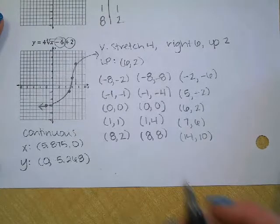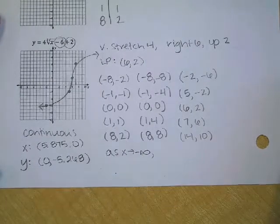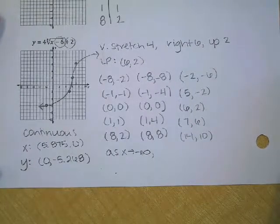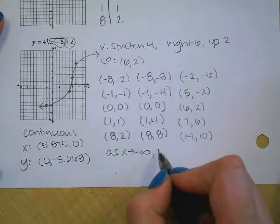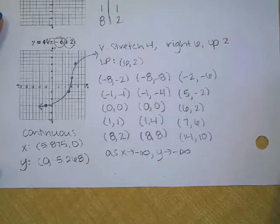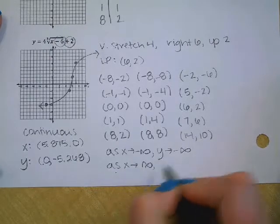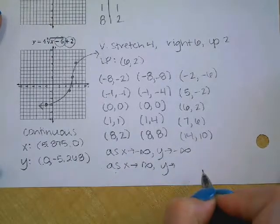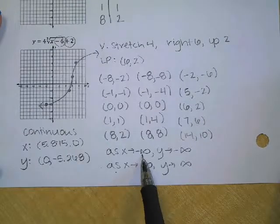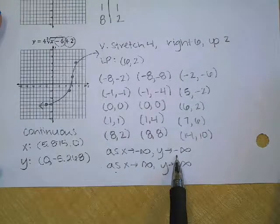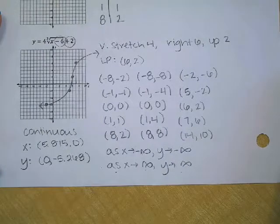End behavior. So we're going to say as X goes to negative infinity, so as we look to the left, is the graph going down or up? Down. So as X goes left, Y goes down. As X goes right, Y goes up. So as X goes to negative infinity, Y goes to negative infinity. As X goes to positive infinity, Y goes to positive infinity.